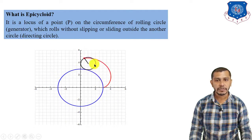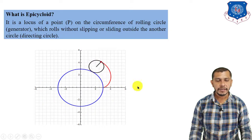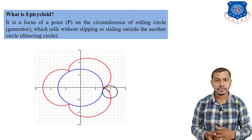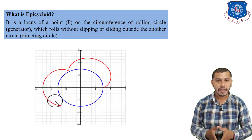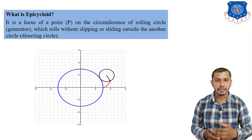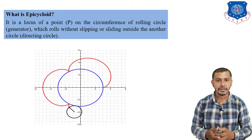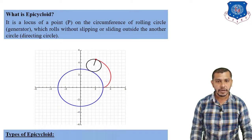In epicycloid, if we take the point inside the circumference of the rolling circle, then the curve generated will be the inferior epitrochoid. And if we take the point outside the circumference of the rolling circle, then the curve generated will be the superior epitrochoid.